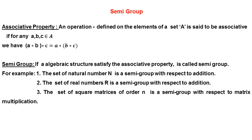If a set satisfies both closure property and associative property, then the set is called a semi-group with the given operation. For example, the set of natural numbers with respect to addition is a semi-group, because 2 + 3 = 5 holds closure property, and for a = 2, b = 3, c = 4, associative property also holds under addition. Additionally, the set of real numbers R is a semi-group with respect to addition, and the set of square matrices of order n is a semi-group with respect to matrix multiplication.